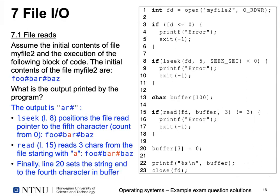Question seven was about file I/O. We assumed a file called 'myfile2' already existed and we executed code that opens the file and does operations: seeking, reading, and printing. The initial file contents were the characters 'foo#bar#bass'. The question was simply: what is the output printed by the program? This might not be ideal for a home exam since you could just run it, so for the real exam we'd probably add a complication.